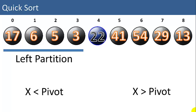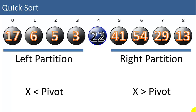Another term is partition. The left side of the pivot we have a left partition. On the right side of the pivot we have a right partition. The pivot essentially partitions the array into two subarrays.